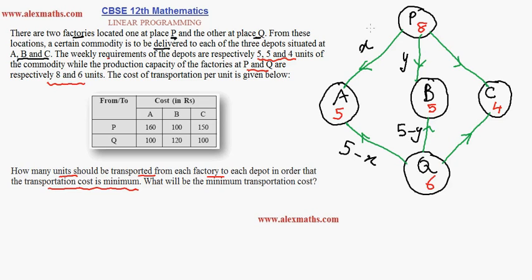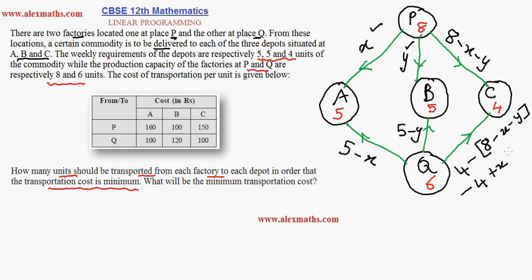Since we transferred x units and y units from factory P, the balance remaining will be (8 minus x minus y), which will be transported from P to C. The remaining requirement of depot C is 4 minus (8 minus x minus y), which simplifies to minus 4 plus x plus y.